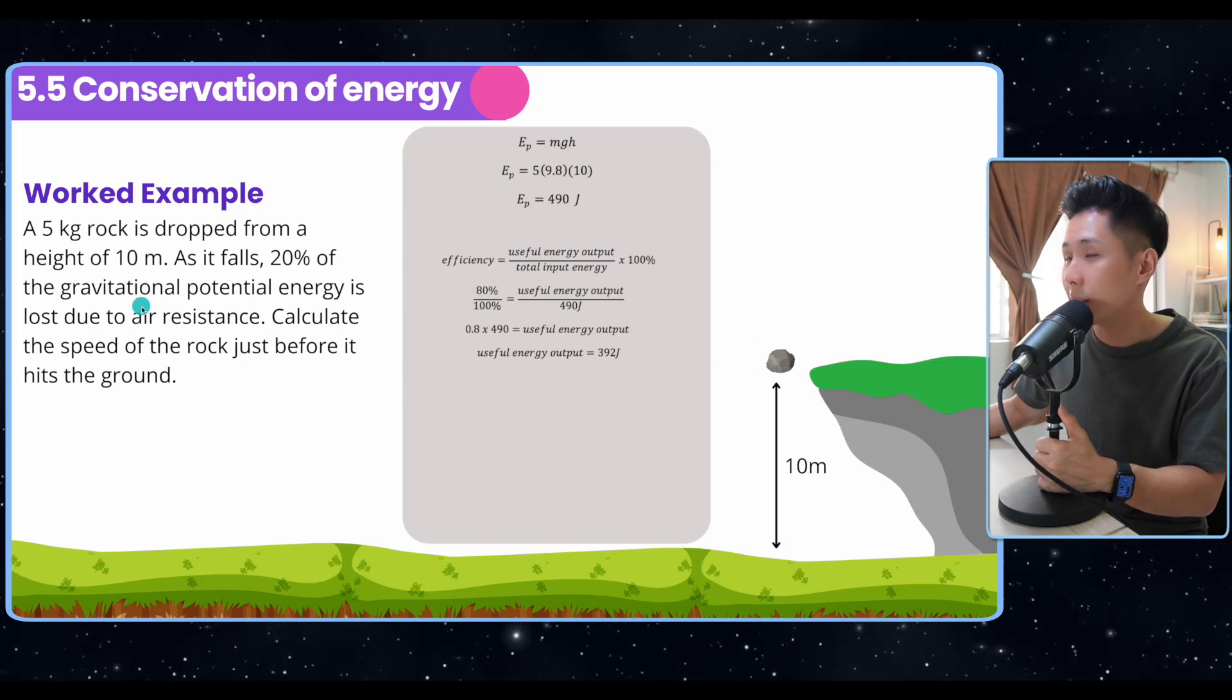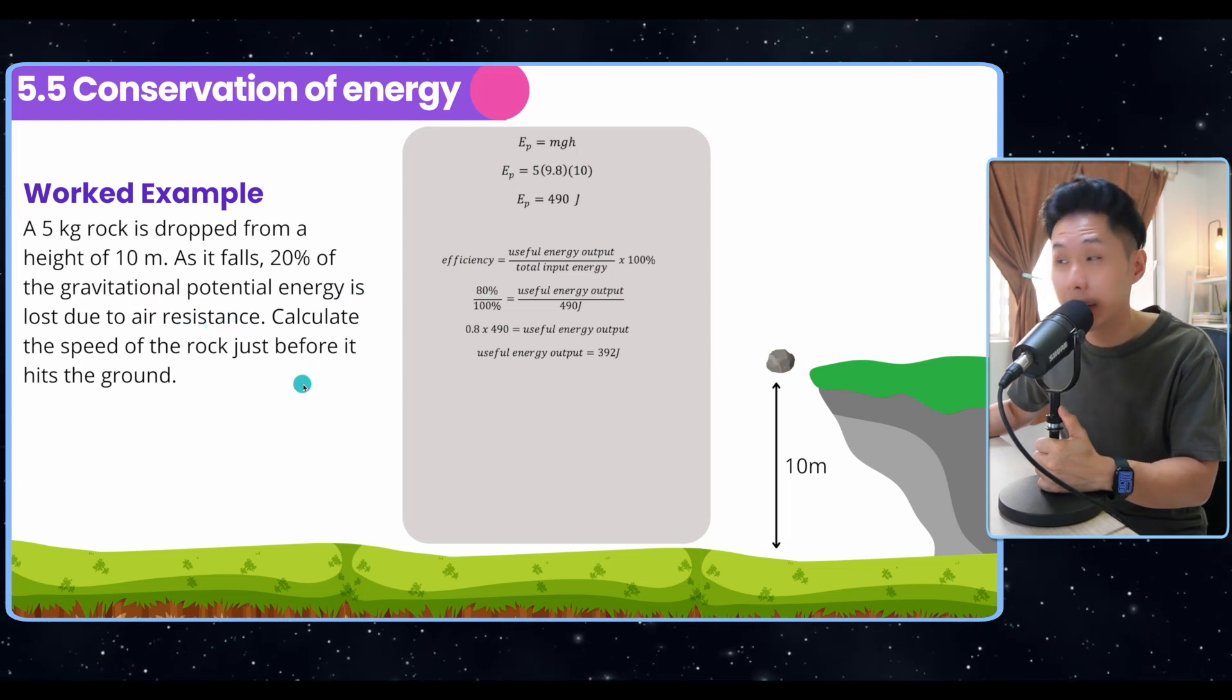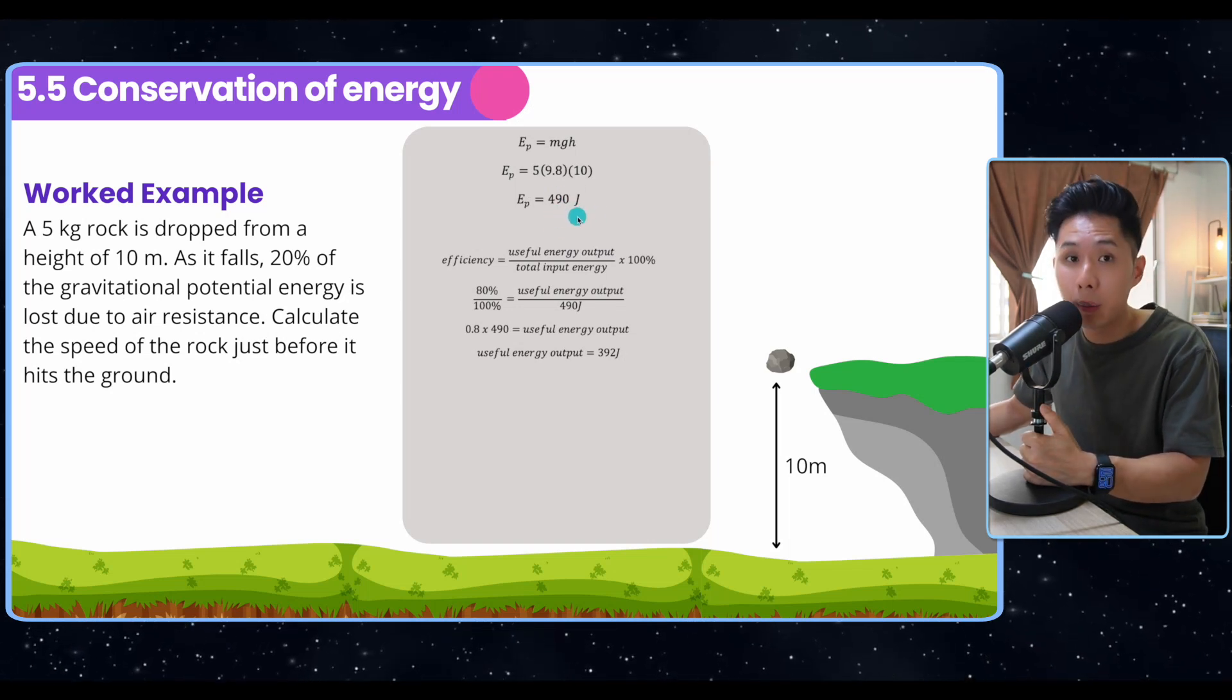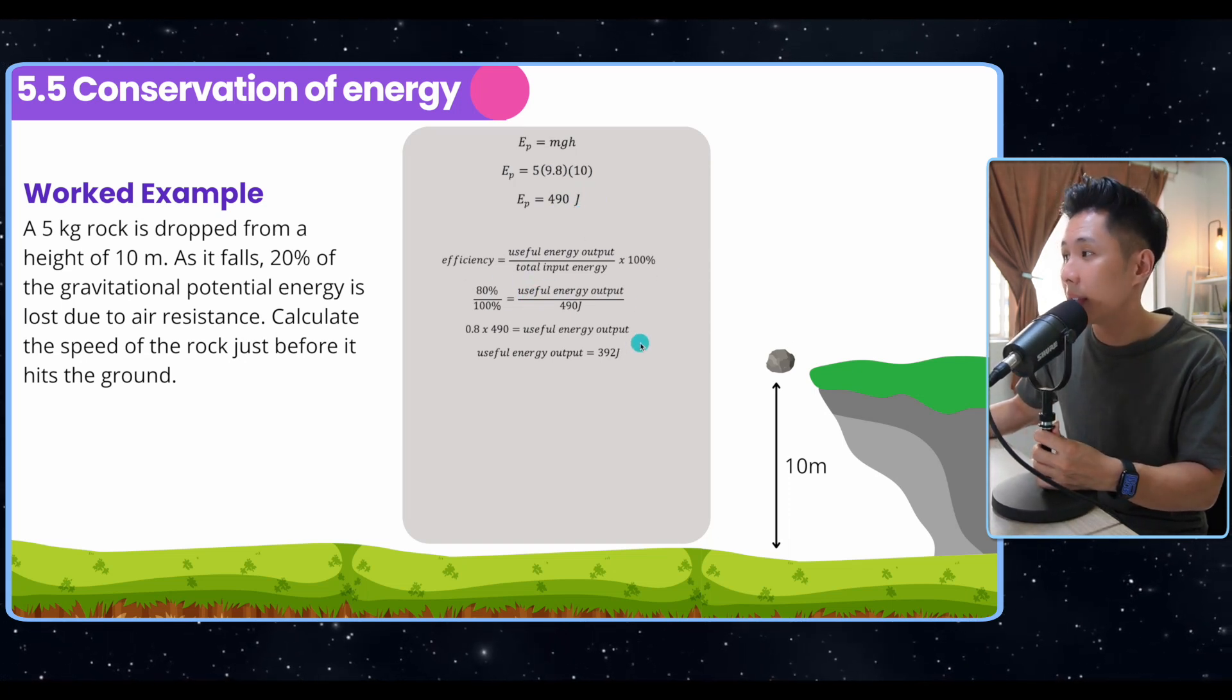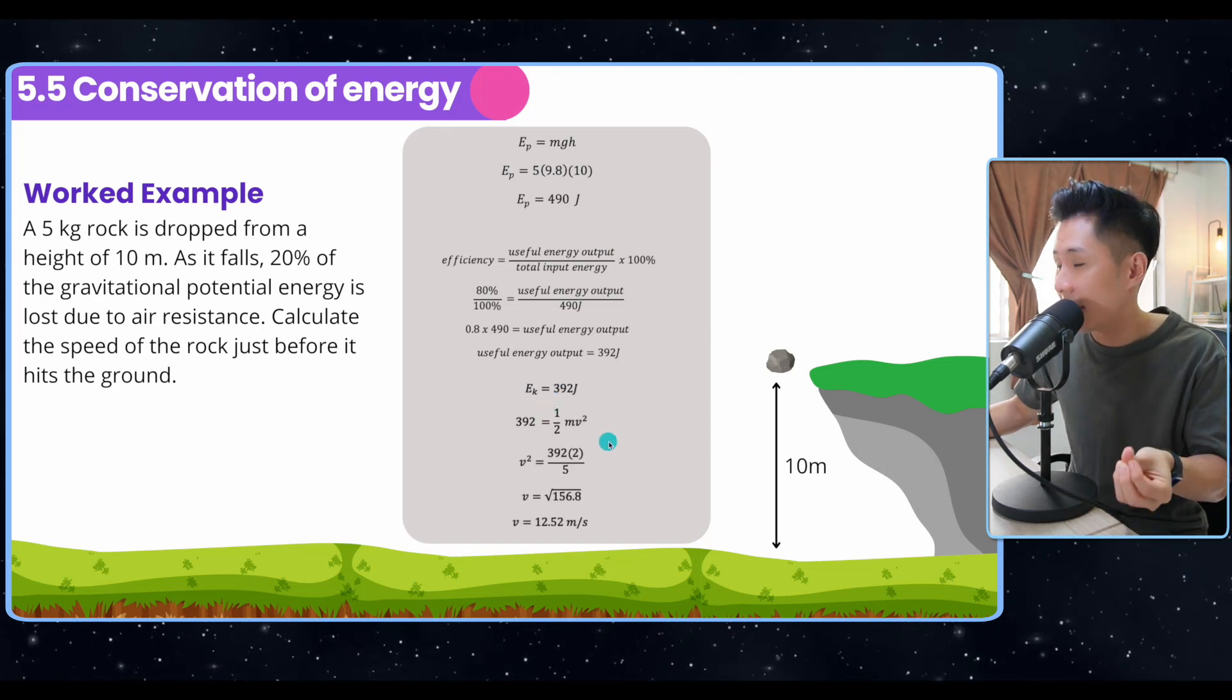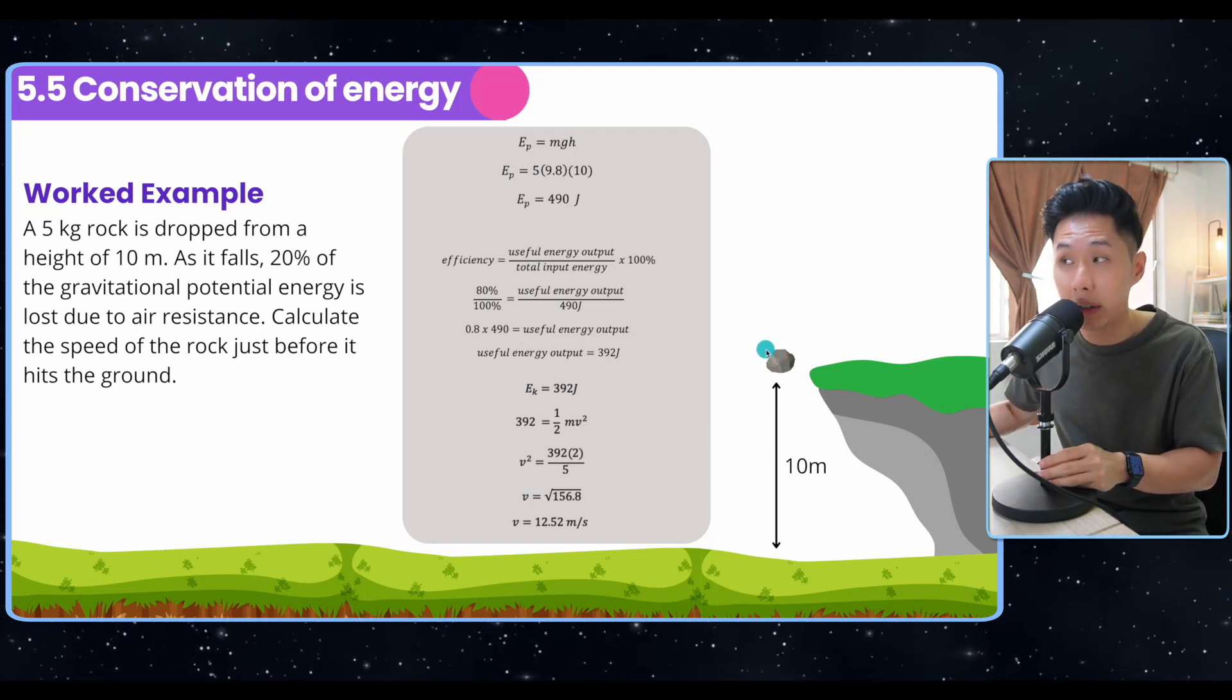So let's say a 5kg rock is dropped from a height of 10m. As it falls, 20% of the GPE is lost due to air resistance. Calculate the speed of the rock just before it hits the ground. So by putting air resistance into the equation, now we know even though my MGH is 490 joules, not all the energy will be converted into kinetic energy. So that's when I use the efficiency formula to find out that only 392 joules of energy is considered useful energy output. I'll let that equal to my kinetic energy. Again, I find out the unknown value V and do some calculation. And I would have been able to find out that the speed of the rock is 12.52 meter per second.